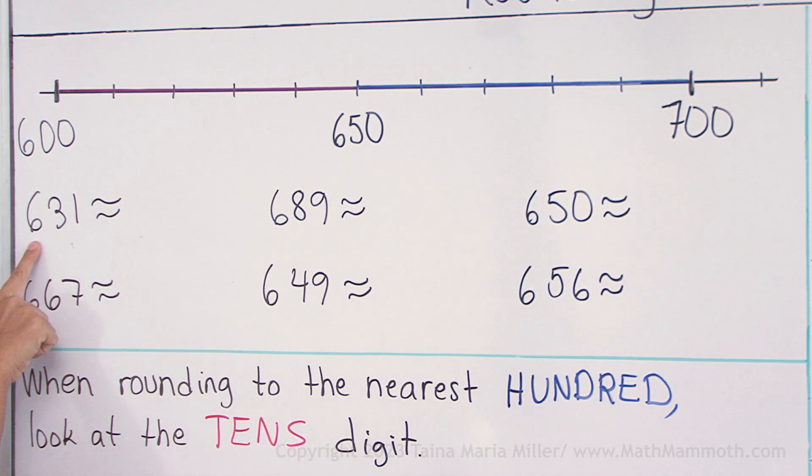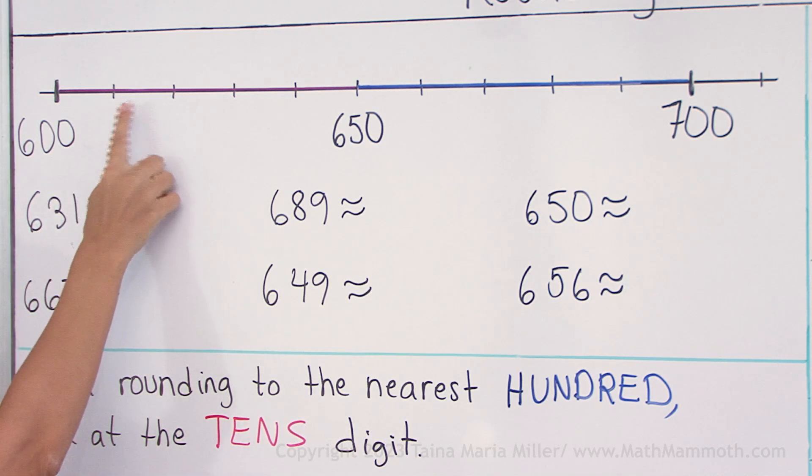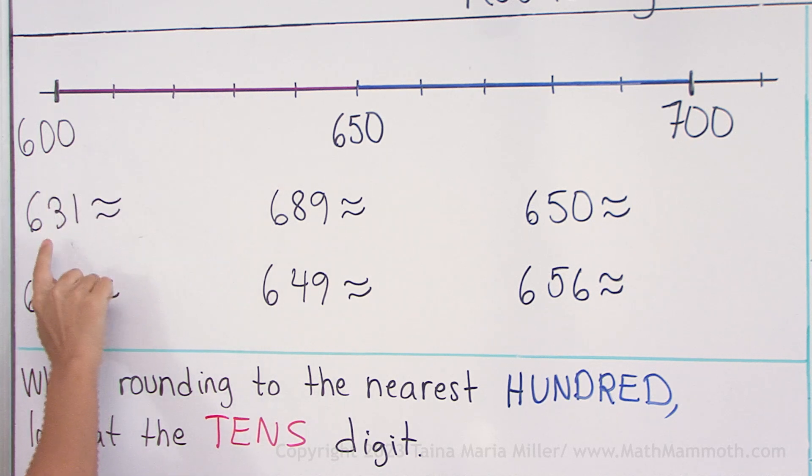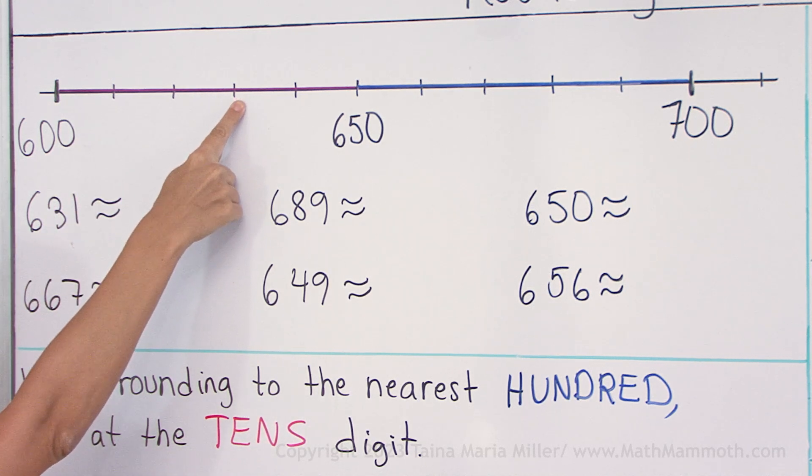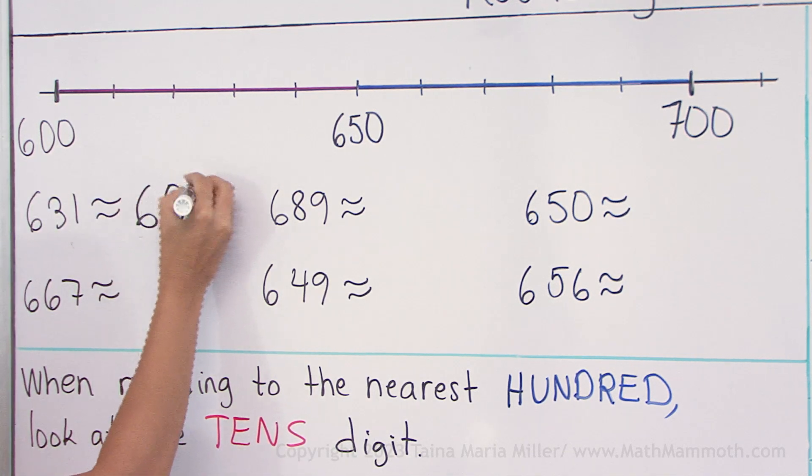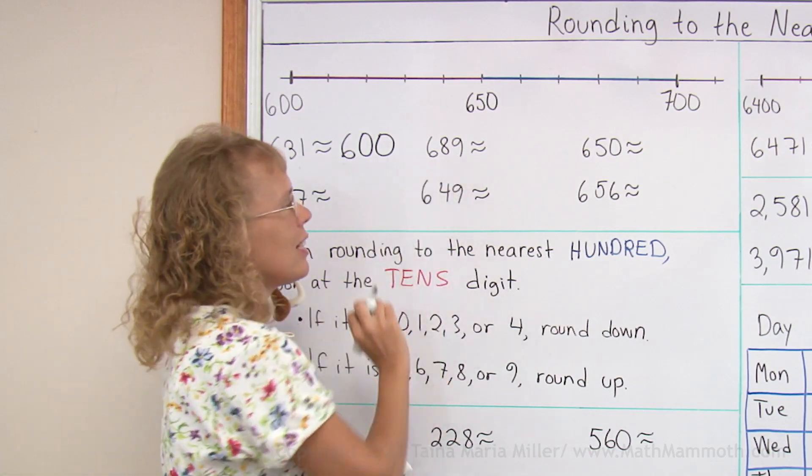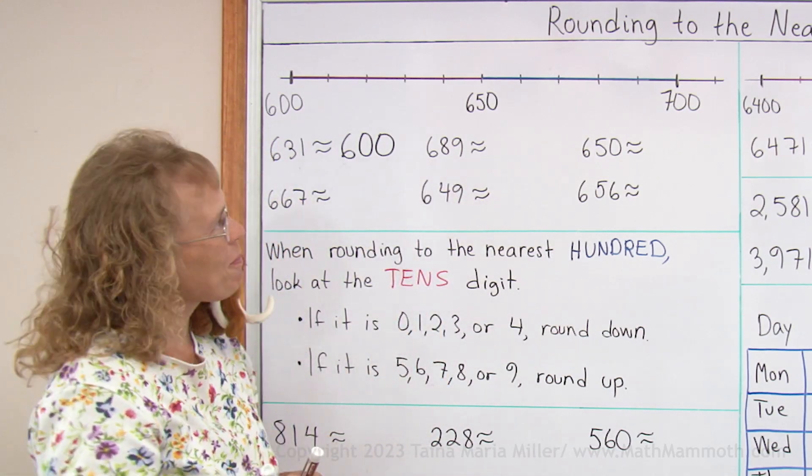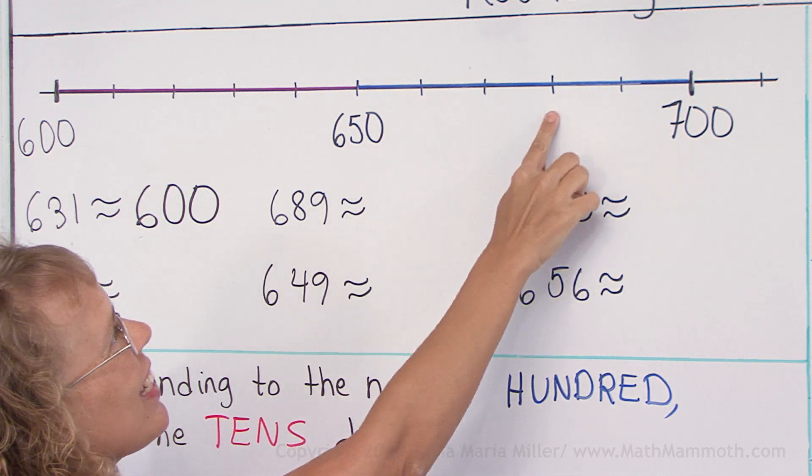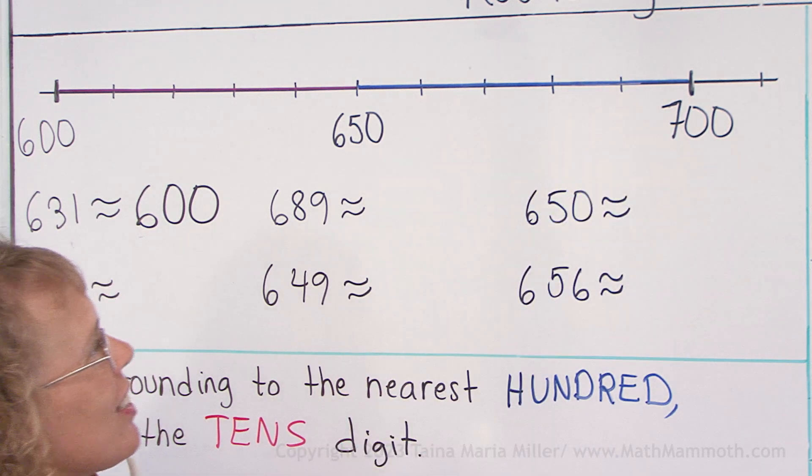So let's say for example 631, on the number line I would have 610, 620, 630. So 631 is somewhere here, right? So it gets rounded down to 600. How about 689? Okay here's 650, so 660, 670, 680. It's somewhere here, it gets rounded up.